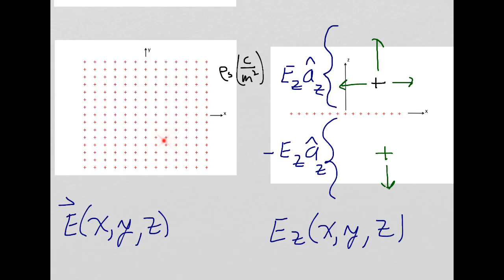Imagine you're somewhere above your plane of charge. Now if you move slowly in the x-direction you would not be able to tell you're moving, because to your right and to your left and in the plus y and in the minus y directions there will always be this infinite plane of charge. So just like you cannot tell you're moving because of the symmetry, the electric field intensity will not depend on x. Similarly, if you're moving in the y-direction you can't tell you're moving, because you're always going to see this infinite plane of charge in whatever direction you look. So your electric field intensity will not depend on the y-component.